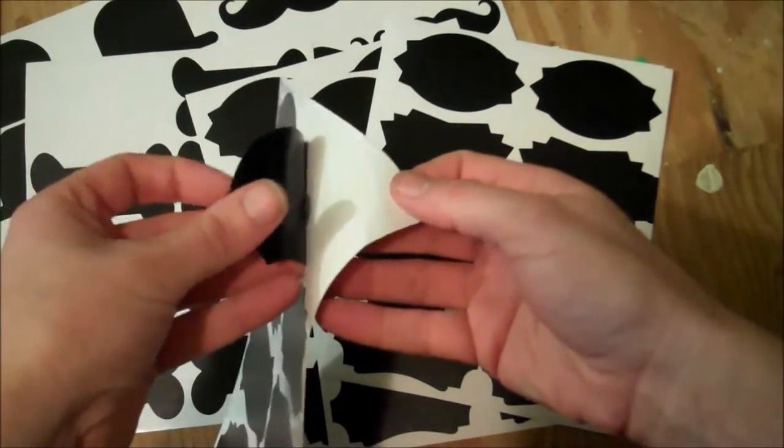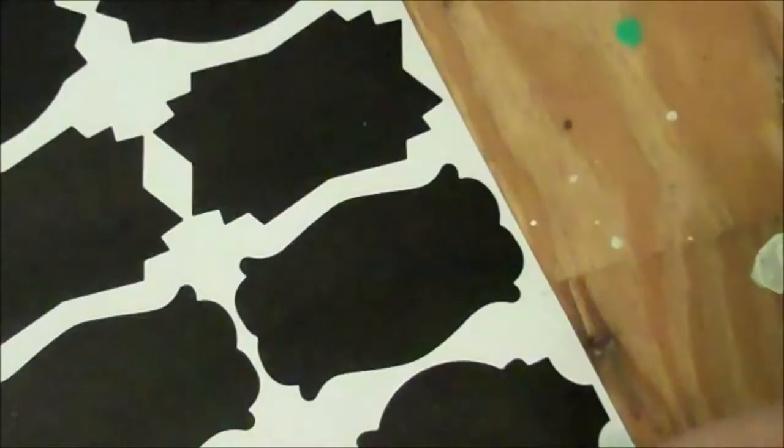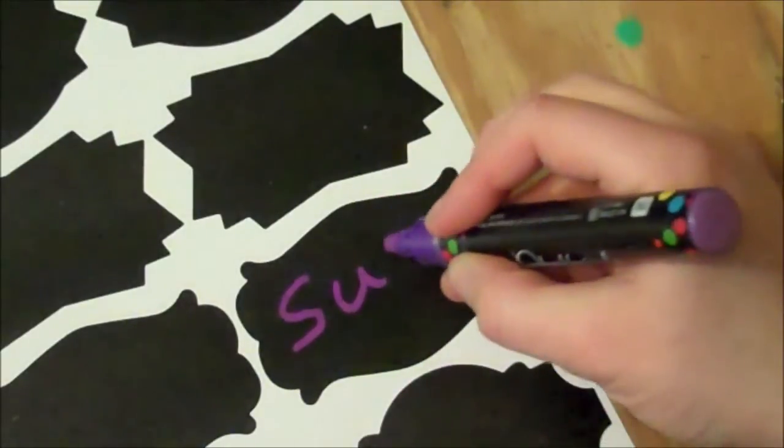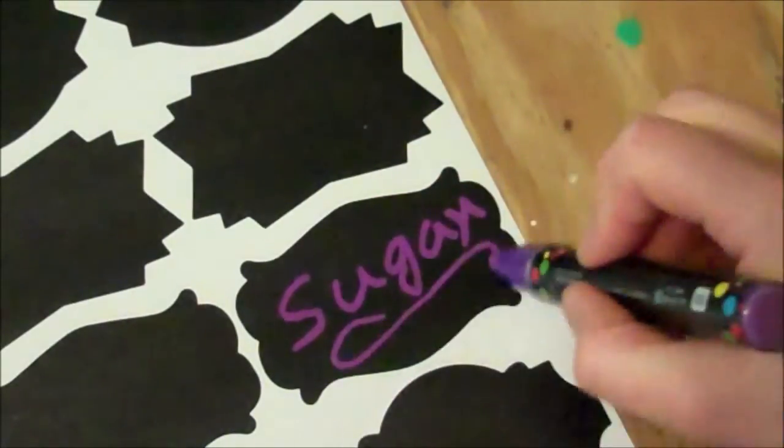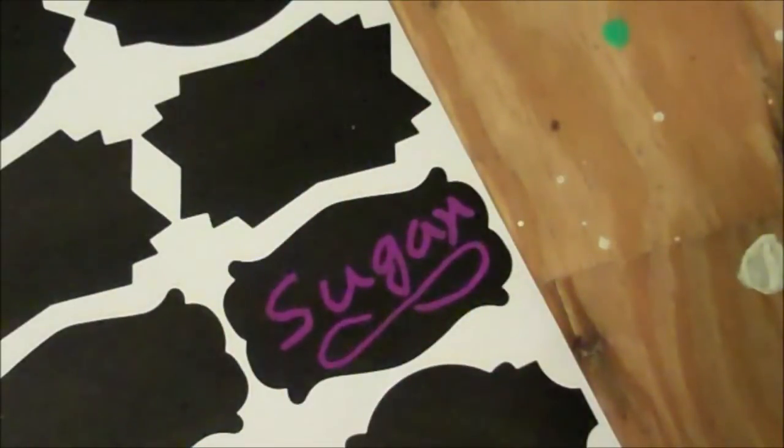They will stick to pretty much anything. They're also great because they come off later on if you want to, so they're reusable. And since they're non-porous, you can write anything on them with the chalk markers. And then once it's dry, it's totally permanent until you decide to take it off with just a little bit of water.